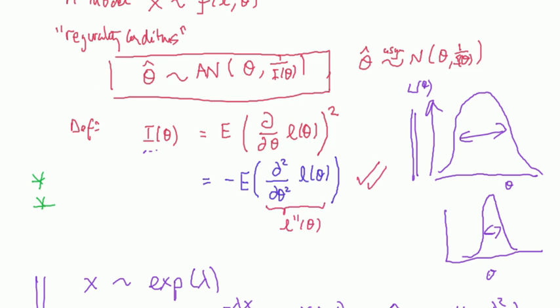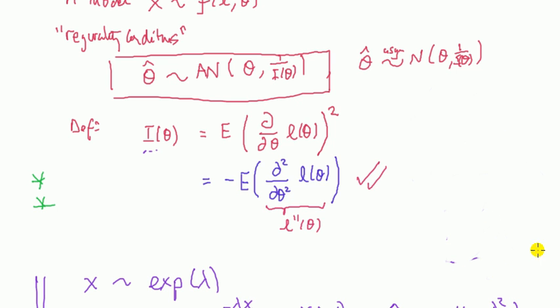Last note on this: in some lecture notes, you might see the information number written like this: I_n(θ) = n × I_1(θ). What this says is n lots of the information number for just one observation. This will hold because your data are independent and identically distributed.